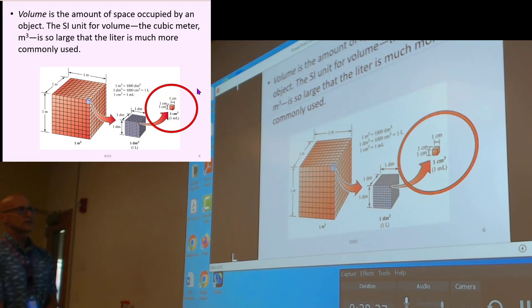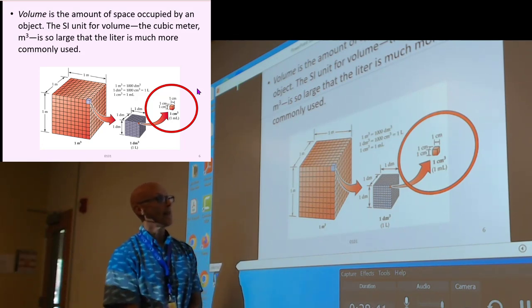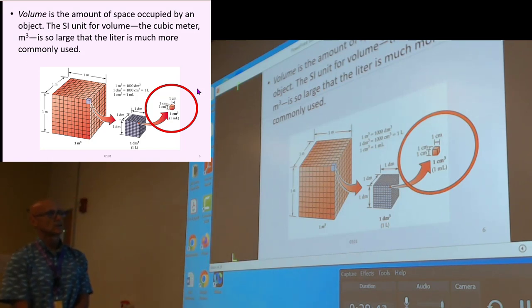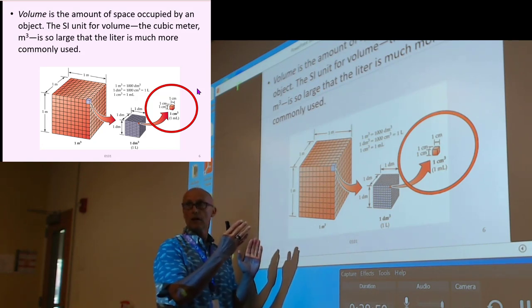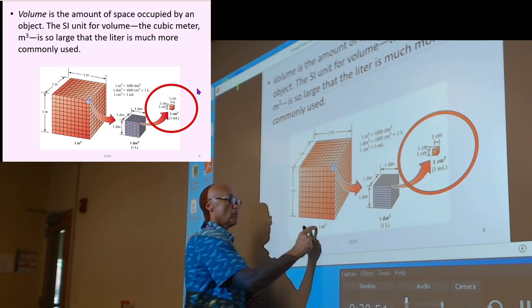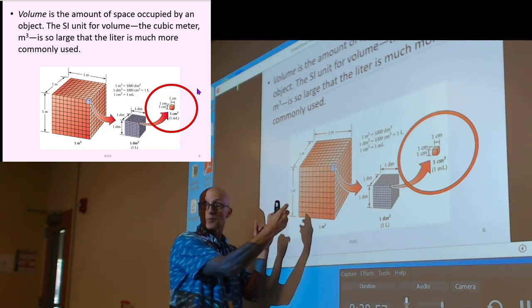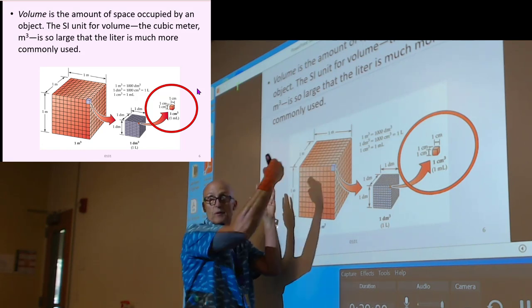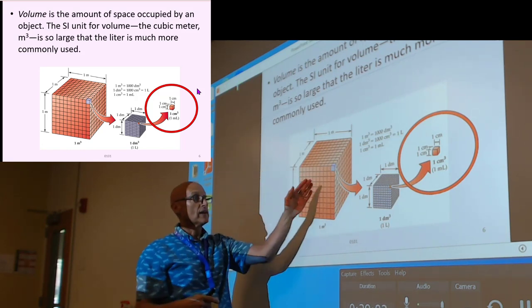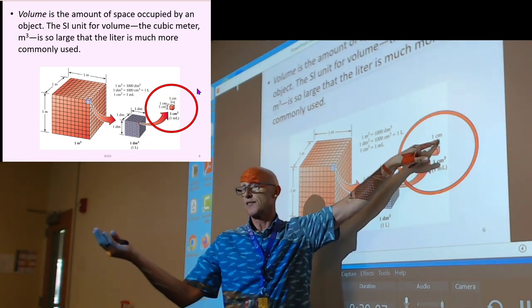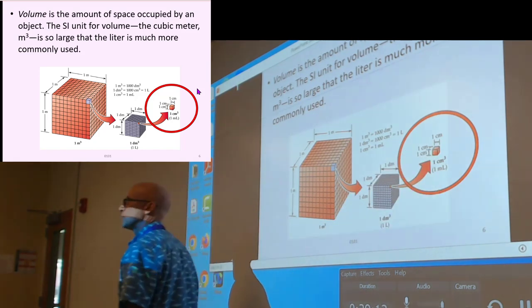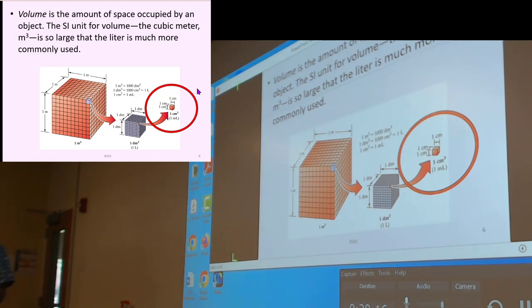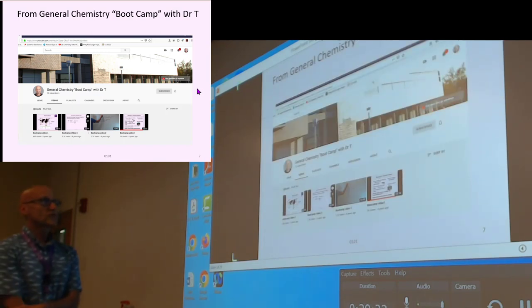One cubic centimeter equals one milliliter — I want you to focus on that. Volume is length times length times height — a three-dimensional thing. It can always be measured in cubic units — how much width, depth, length. But we also have derived units: instead of saying a cubic centimeter, we just say a milliliter. That's not even an abbreviation — it's a common unit in its own right.